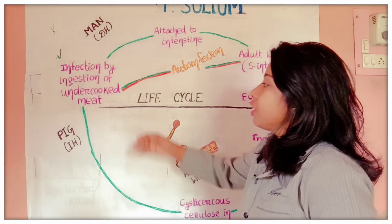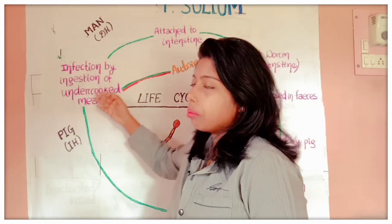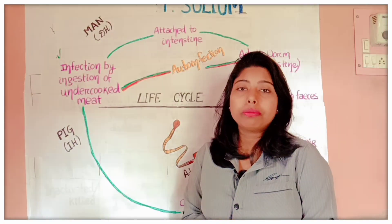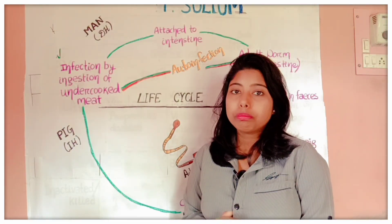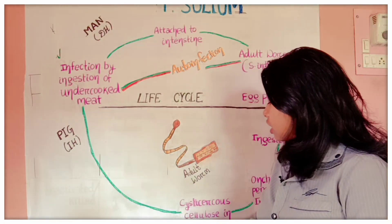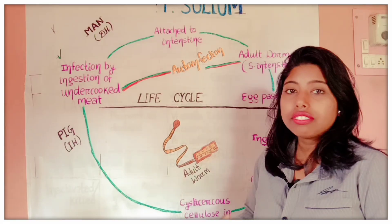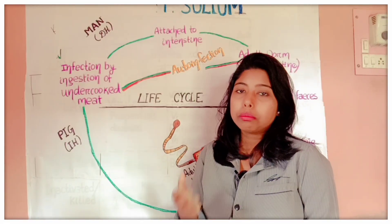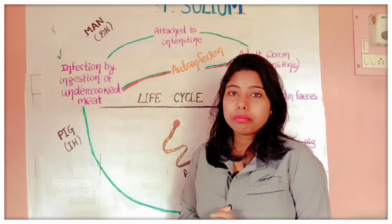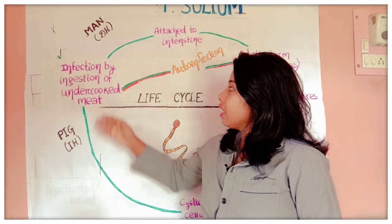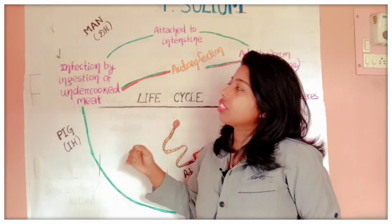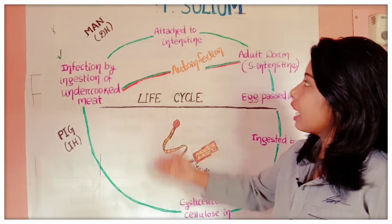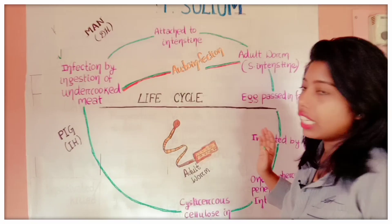When the human eats the undercooked meat of the pig — which contains cysticercus larvae inside the muscle — they get the infection. The cysticercus larva is now inside the human, and the cycle repeats. This is all about the life cycle of Taenia solium.